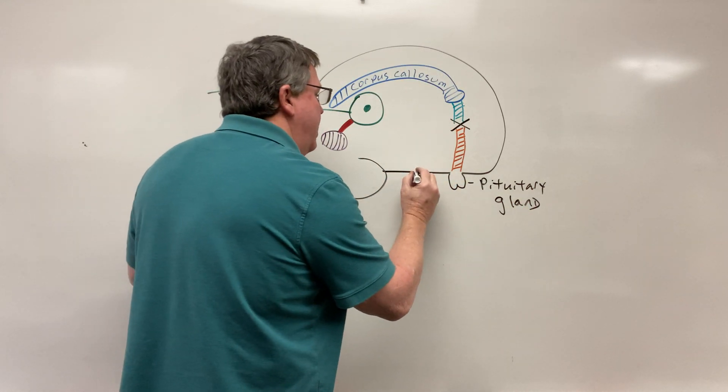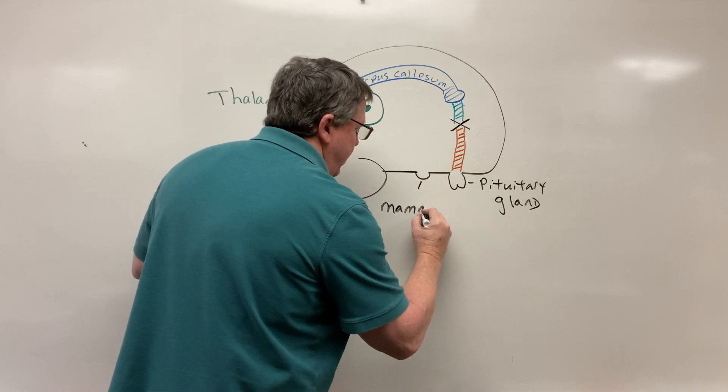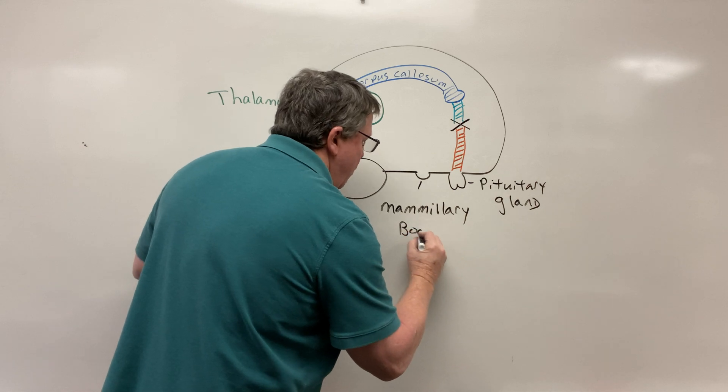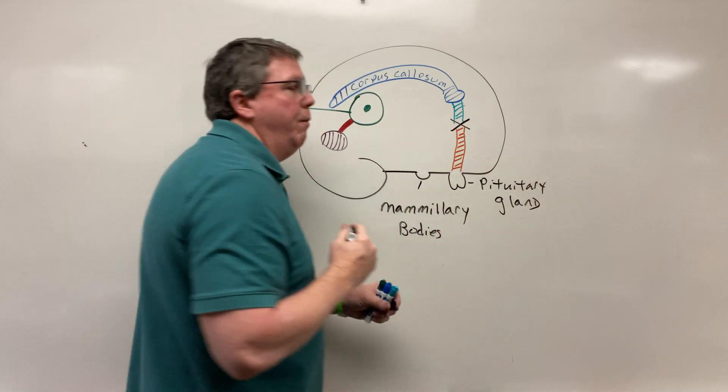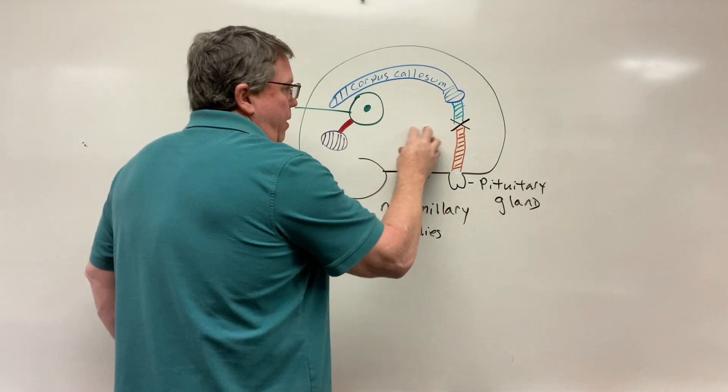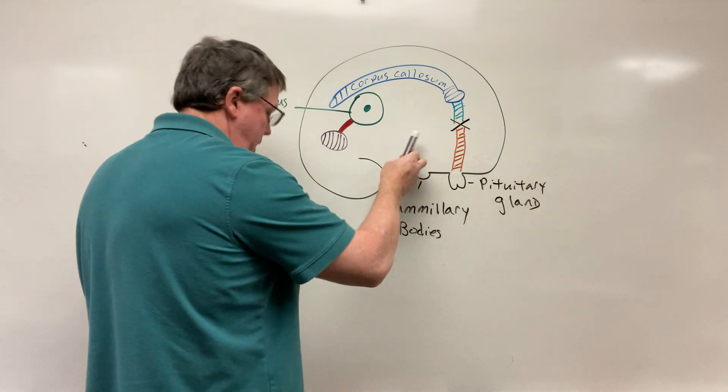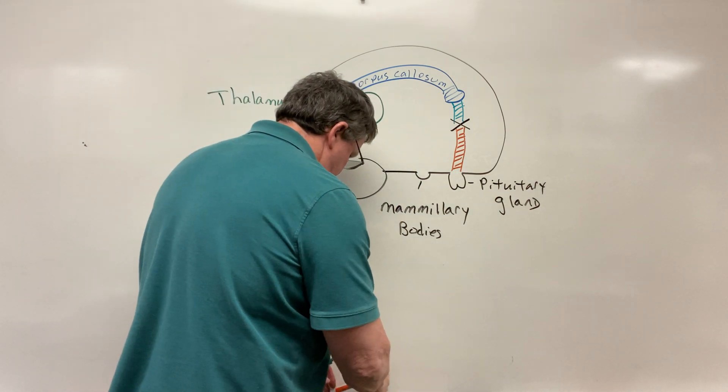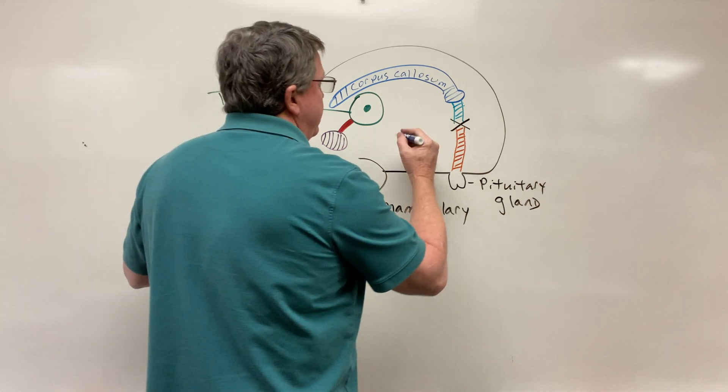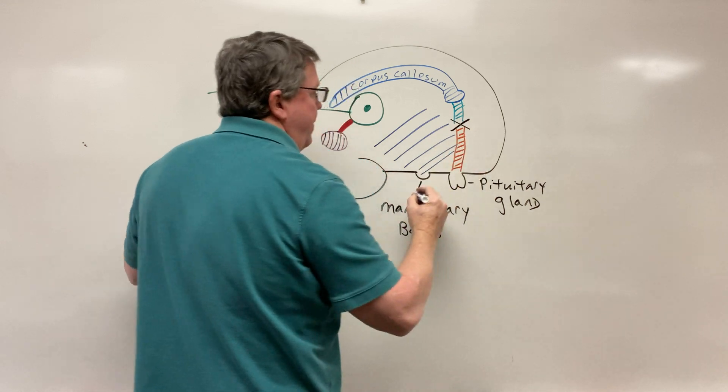And then another part of the hypothalamus is you have something called mammillary bodies. Mammillary bodies help you put memories with smell. This area in here is the hypothalamus.